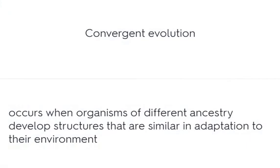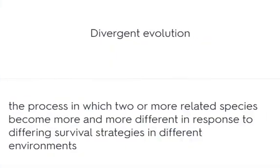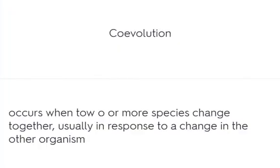Convergent evolution occurs when organisms of different ancestry develop structures that are similar in adaptation to their environment. Divergent evolution is the process in which two or more related species become more and more different in response to differing survival strategies in different environments. Co-evolution occurs when two or more species change together, usually in response to a change in the other organism.